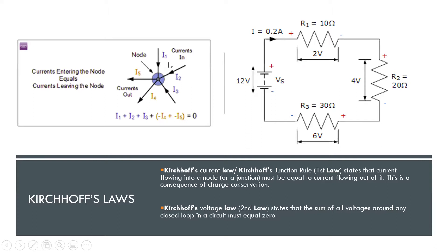The blue color represents the current coming into the junction. That blue circle is just to focus on the node or the junction — there is nothing there.